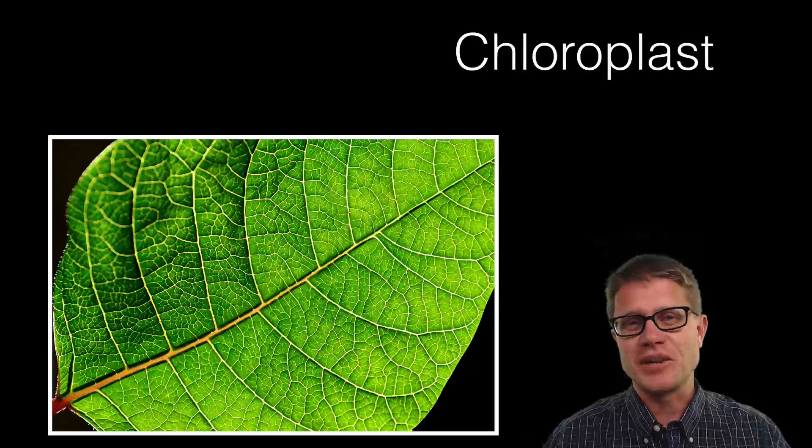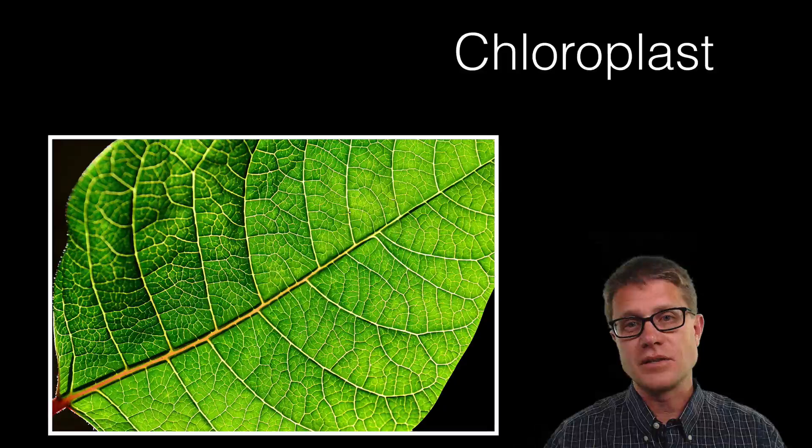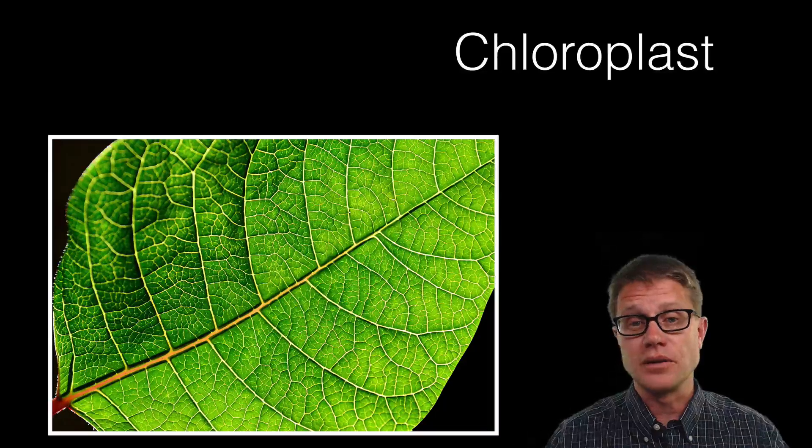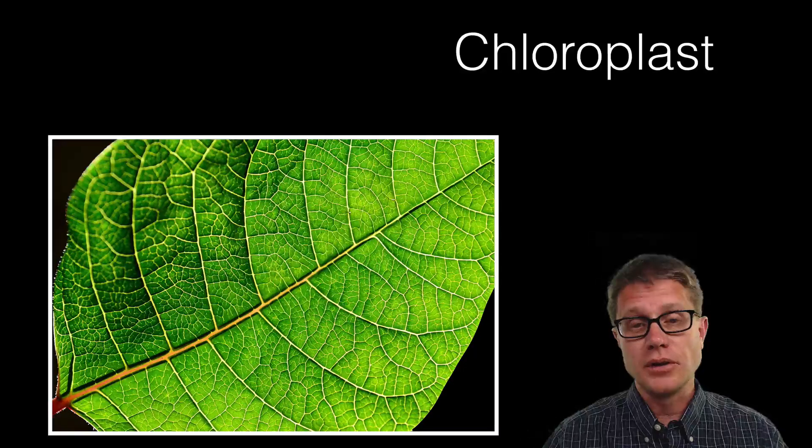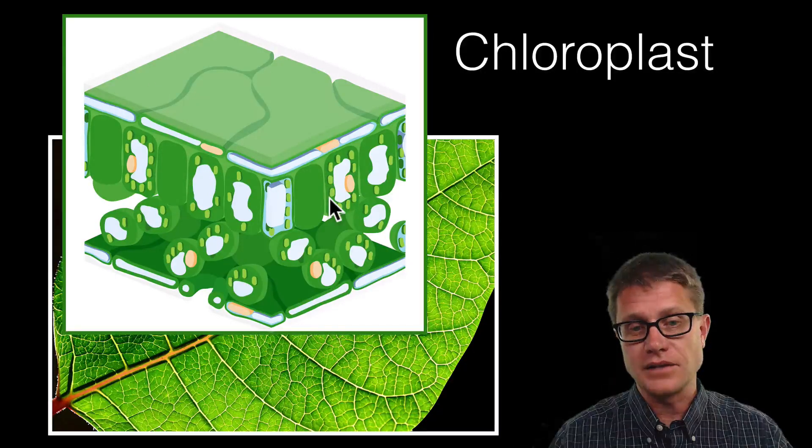Hi. It is Mr. Andersen and in this video I am going to talk about the chloroplast. That is the organelle found in plants where photosynthesis takes place. A great place to find them would be in the leaf of a tree. If we look at that in cross section we are going to have a number of cells, and these are going to be the organelles found within that cell.